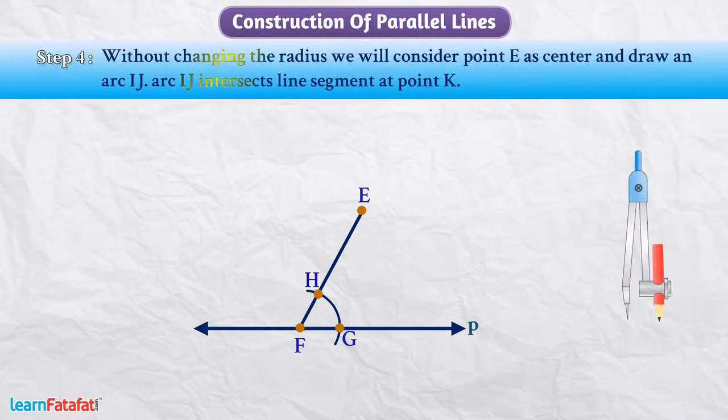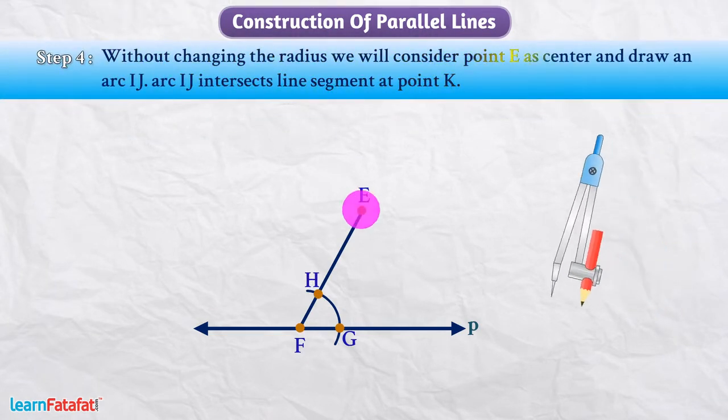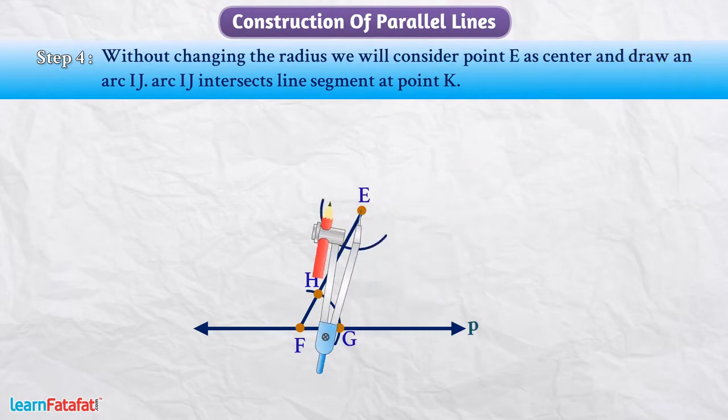Without changing the radius, we will consider point E as center and draw an arc IJ. Arc IJ intersects line segment at point K.